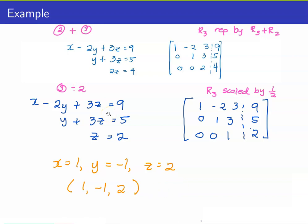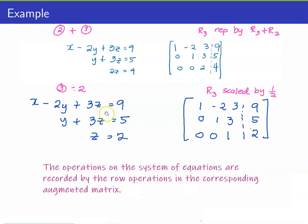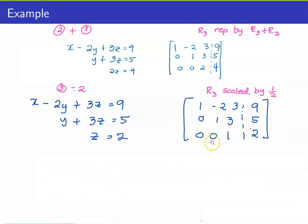This illustration shows that all the operations you perform on your linear equations are recorded by the row operations on your augmented matrix. In our next lesson, we will study row echelon form, and this is what we want to obtain in order to be able to solve for the variables.